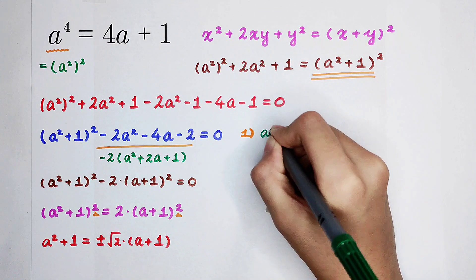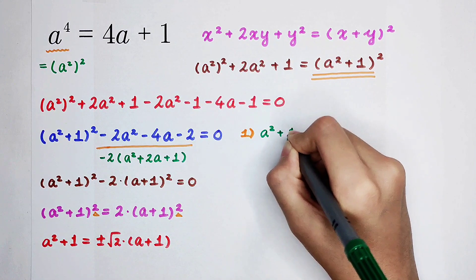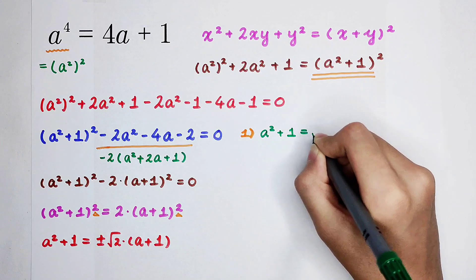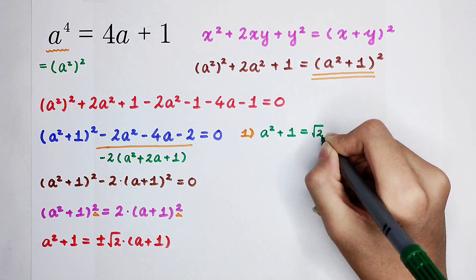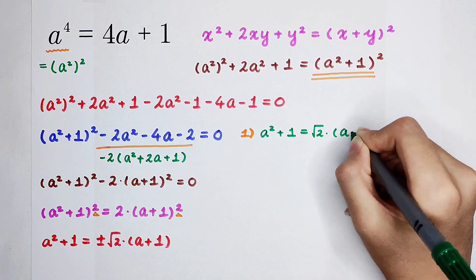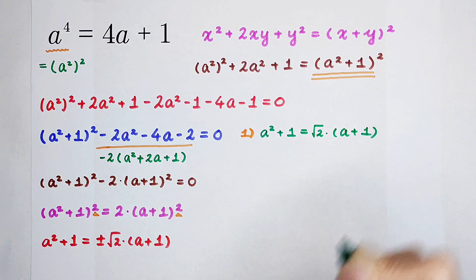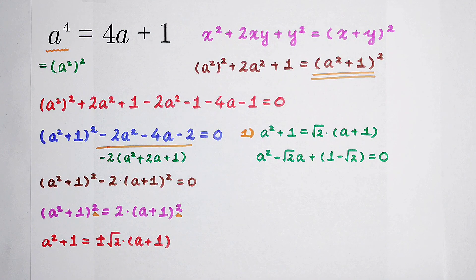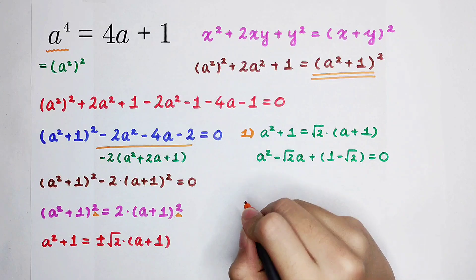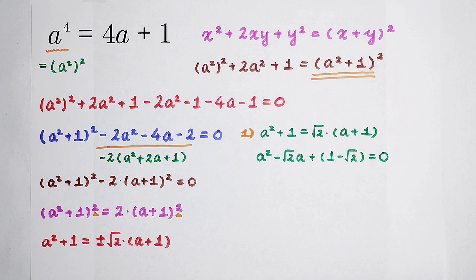The first case. a squared plus 1 is equal to positive square root of 2 times a plus 1. Of course, this equation is not difficult. You can solve it by yourself. I'm going to give a tip.